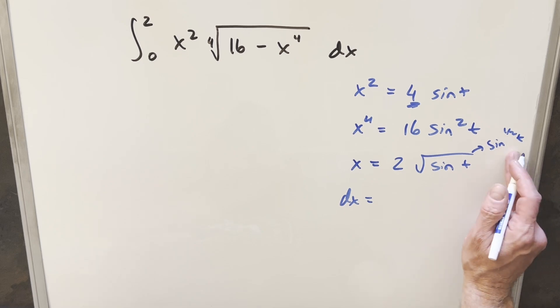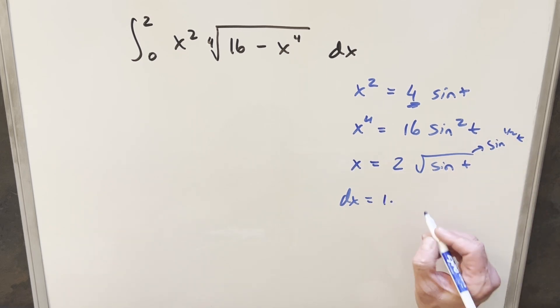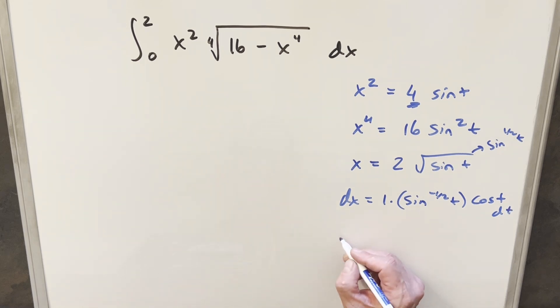So when you do that, half times 2 gives me a 1 in front. Then we're going to have sine to the negative one half. And then chain rule on sine t, derivative of that is going to give me cosine t dt. But then cleaning that all up, I'm just going to write this as dx equals cosine t over square root sine t dt.